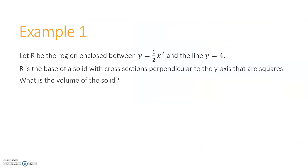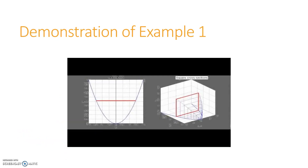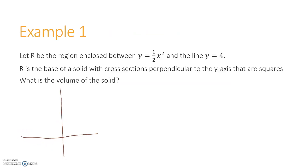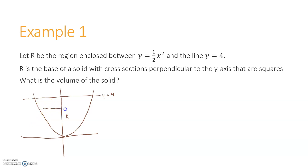Here's an example problem. Let R be the region enclosed between y = (1/2)x² and the line y = 4. R is the base of a solid with cross-sections perpendicular to the Y-axis that are squares. We start by drawing the region: y = (1/2)x² is a parabola, a little wider than normal, and y = 4 is a horizontal line. Coming up out of the plane, we have square cross-sections.